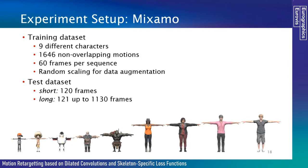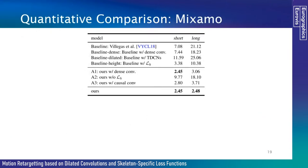For the training dataset, we used 1,646 non-overlapping motion clips for 9 characters in Mixamo. During training, 60-frame clips were randomly sampled from training sequences with random scaling for data augmentation. For testing, we used short sequences of 120 frames and long sequences comprising the entire undivided motion. For quantitative evaluation, we used mean square error between joints' global coordinates. Our model outperformed all baseline models for both short and long sequences.